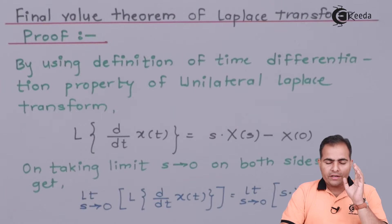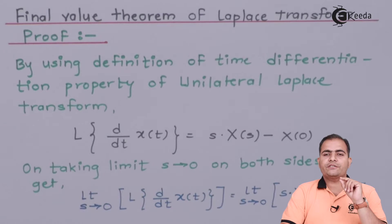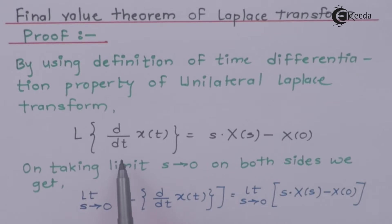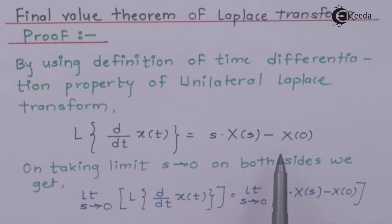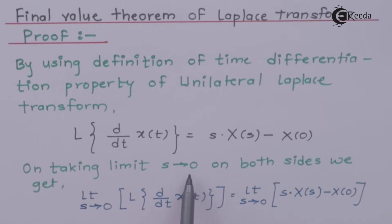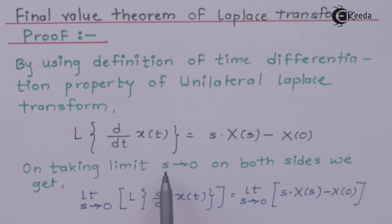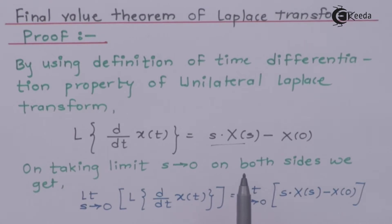To prove this, we use the time differentiation property of the unilateral Laplace transform. According to that property, the Laplace transform of d/dt x(t) is s·X(s) minus the initial value x(0). We now apply the limit as s tends to 0 to both sides. On the right-hand side, the limit is applied only to s·X(s), because x(0) is a constant and limits are applied only to the variable s.